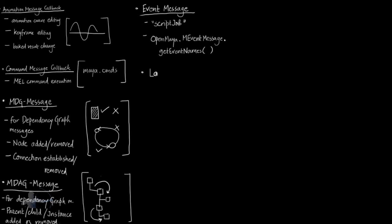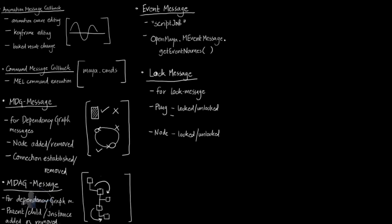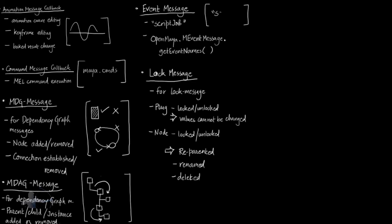The next callback class is the lock message callback. These callbacks are used to watch for lock messages — specifically when a plug or a node is locked or unlocked. Plugs are locked to prevent their values from being changed, and nodes are locked to prevent them from being parented, reparented, renamed, or deleted.